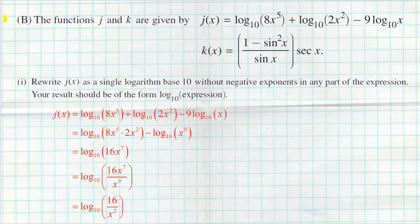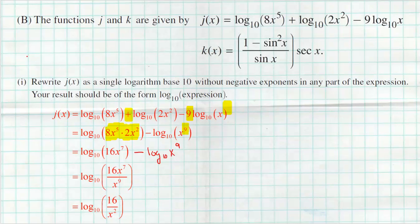First, two logs being added can combine by multiplying what's inside, so I take the first two logs and write them as a single log of 8x to the fifth times 2x squared. Then I use the power rule — that 9 becomes an exponent, giving x to the ninth. Now 8x to the fifth times 2x squared is 16x to the seventh, because 8 times 2 is 16 and 5 plus 2 is 7.